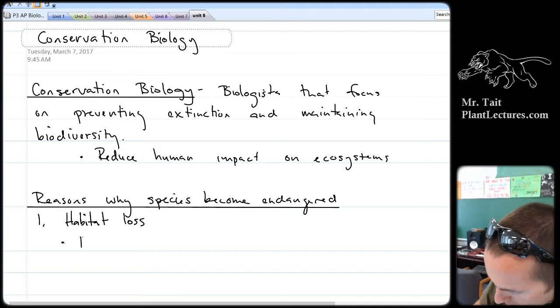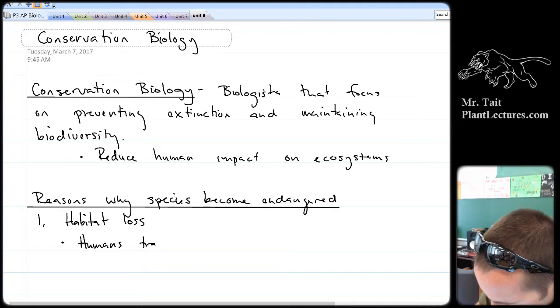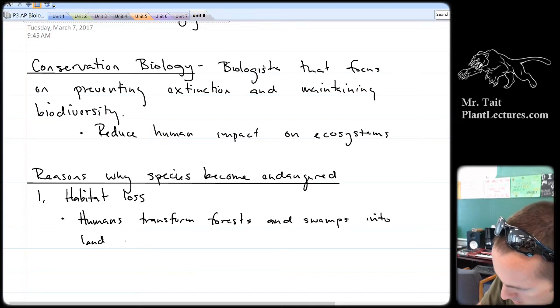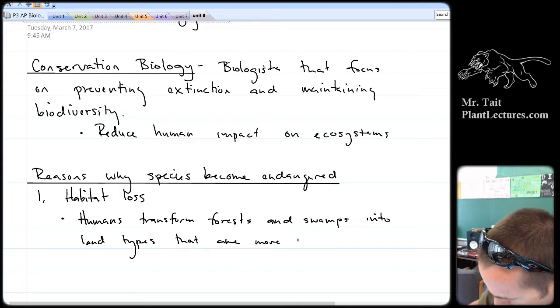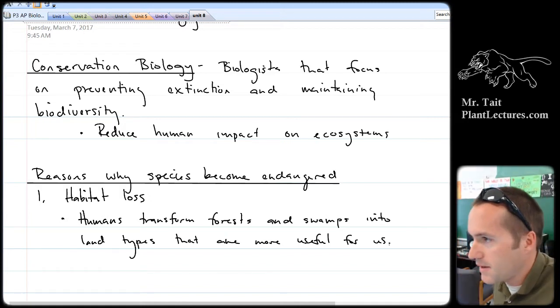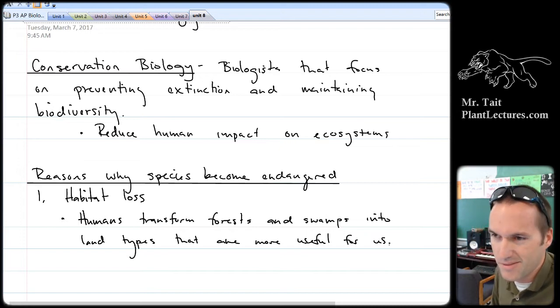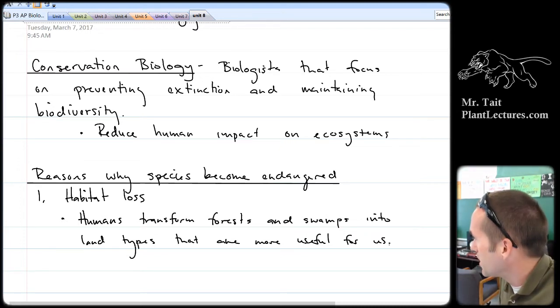Humans transform forests and swamps into land types that are more useful for us. Our hometown here, Tampa Bay, is a perfect example. Tampa used to be a big old swamp, but if it was still a big old swamp, not only could not nearly as many people live here, but we would all die of various diseases related to living in the swamp. Malaria probably would be a big hit for us.